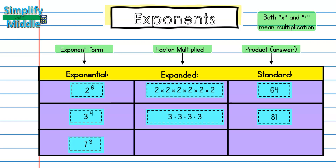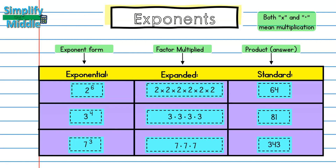Take a moment and pause the video to see if you can figure out what 7 to the 3rd power is in expanded and standard forms. You should have gotten for expanded form 7 times 7 times 7. I know 7 times 7 is 49, and 49 times 7 is 343.